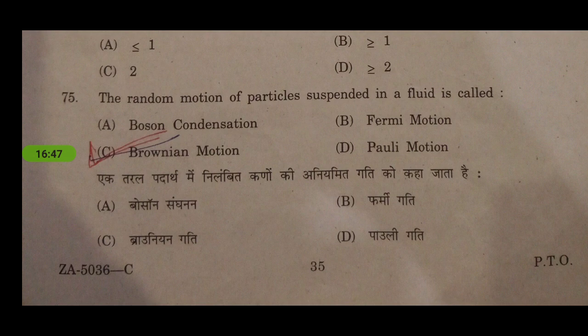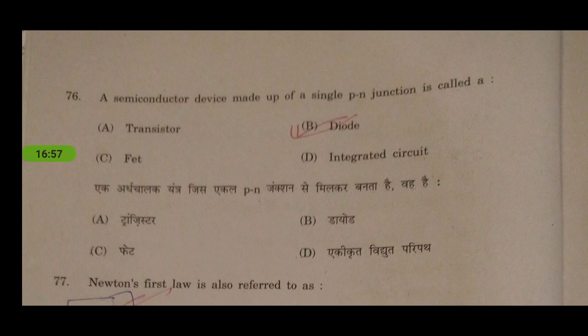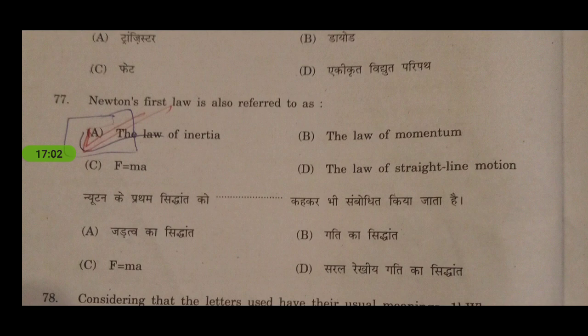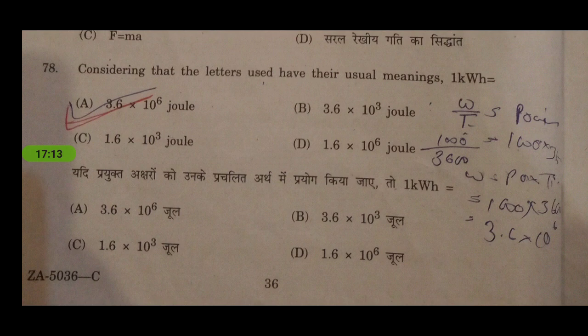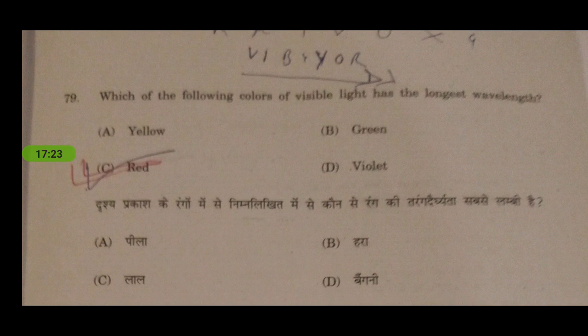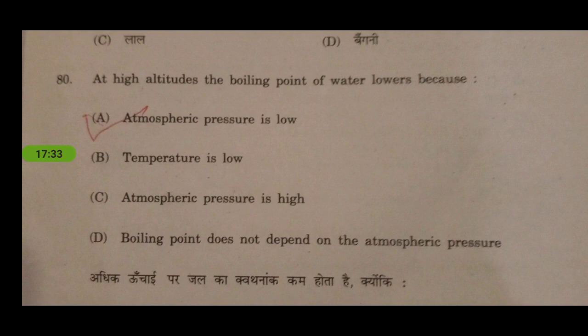A physics question: the random motion of particles suspended in a fluid is called Brownian motion, and this motion is responsible for the cooling of water in an earthen pot. A semiconductor device made of a single p-n junction is called a diode. Newton's first law is also referred to as the law of inertia. One kilowatt-hour equals 3.6 × 10⁶ joules. Red has the longest wavelength of visible light and violet has the shortest. At high altitudes, the boiling point of water is lower because atmospheric pressure is low.